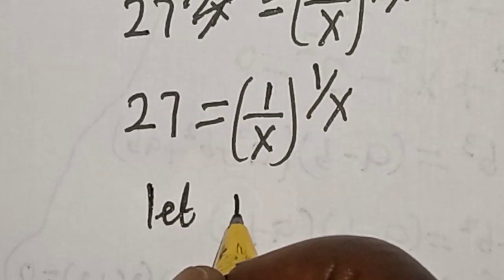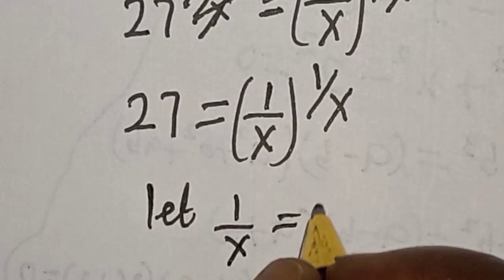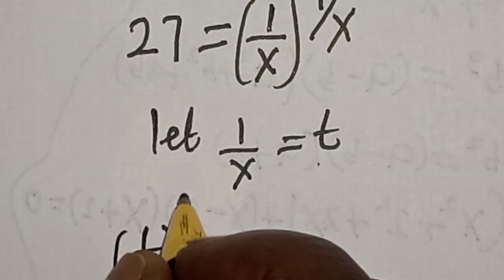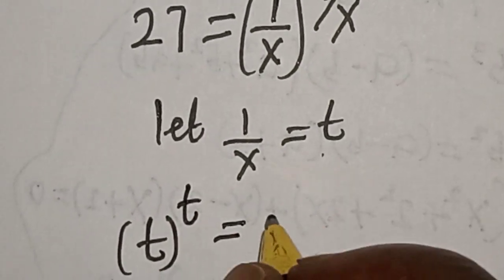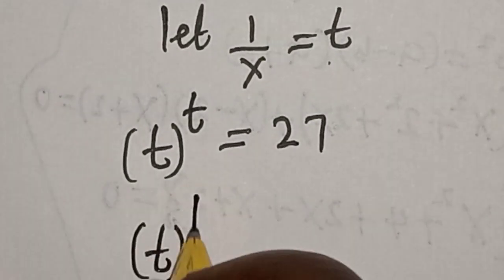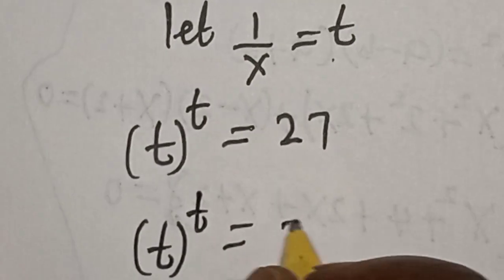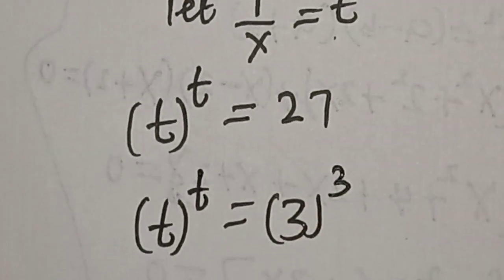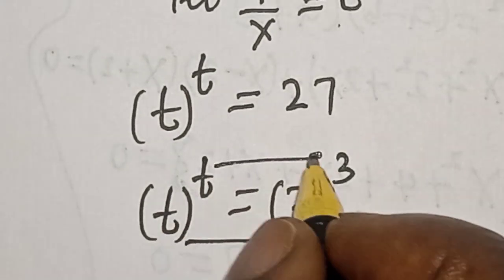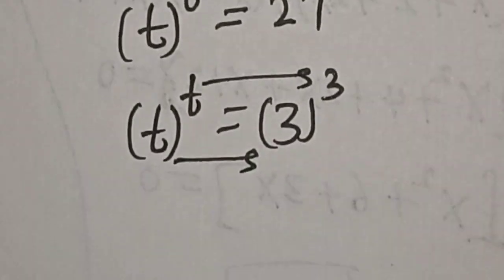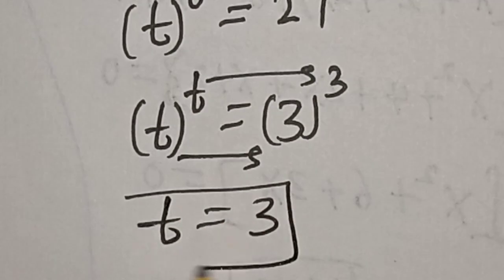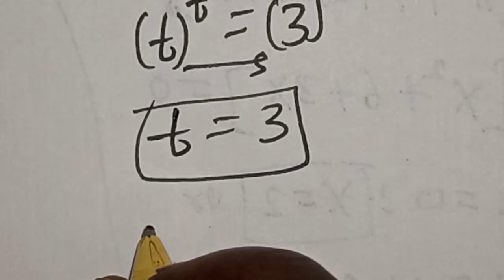Now let's set 1 divided by x equal to t. Now we have t raised to power t is equal to 27. This is t raised to power t is equal to 3 raised to power 3. By comparing, t is equal to t and the exponent is equal to the exponent, therefore t is equal to 3. That is the value of t. But we remember that t is equal to 1 over x.